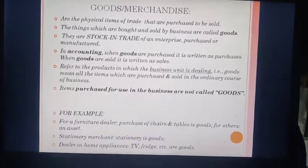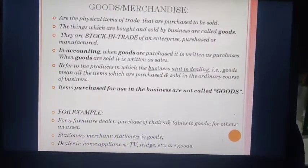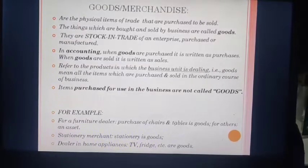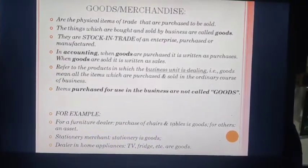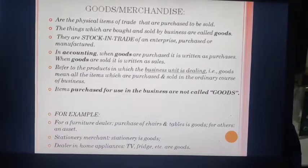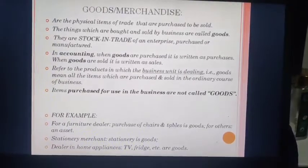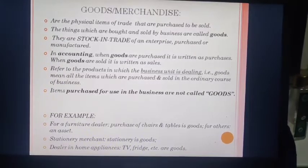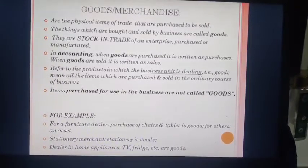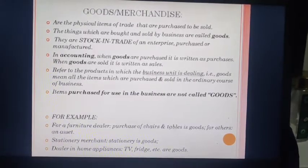For example, if you are a furniture dealer, purchase of chairs and tables is goods for you because it is purchased to be sold. However, for others who are not dealing in furniture, it is considered an asset. For the stationery merchant, stationery purchased is considered as goods. For the dealer in home appliances, TV, fridge, etc. are goods.